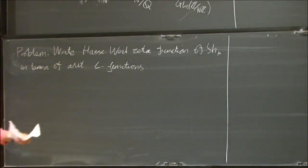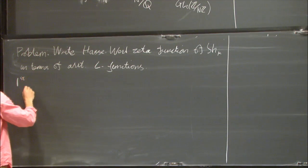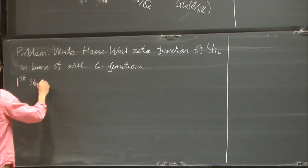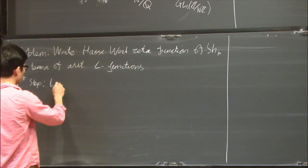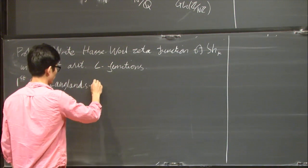In a series of papers in the 70s, Langlands outlined a program to do this. The first step in this program is now known as the Langlands-Rapoport conjecture.